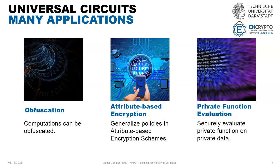A more crypto-related application is in attribute-based encryption schemes. In an attribute-based encryption scheme, when we set up this encryption scheme, we define some policies that the person who wants to decrypt the message needs to fulfill. These policies can be like the person must be living in some specific country, or their email address must be found in some specific domain. When we want to reuse such an encryption scheme, we can use universal circuits to generalize these policies.